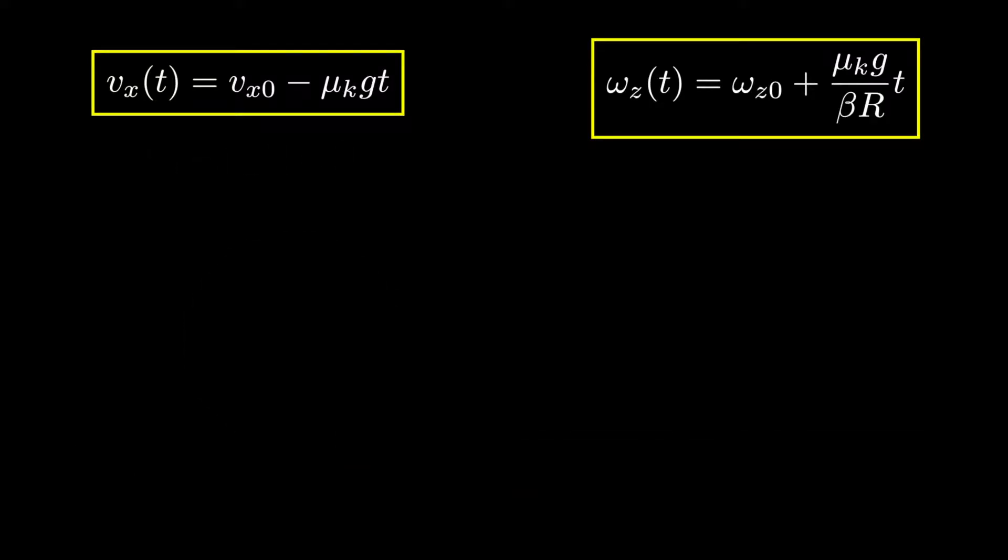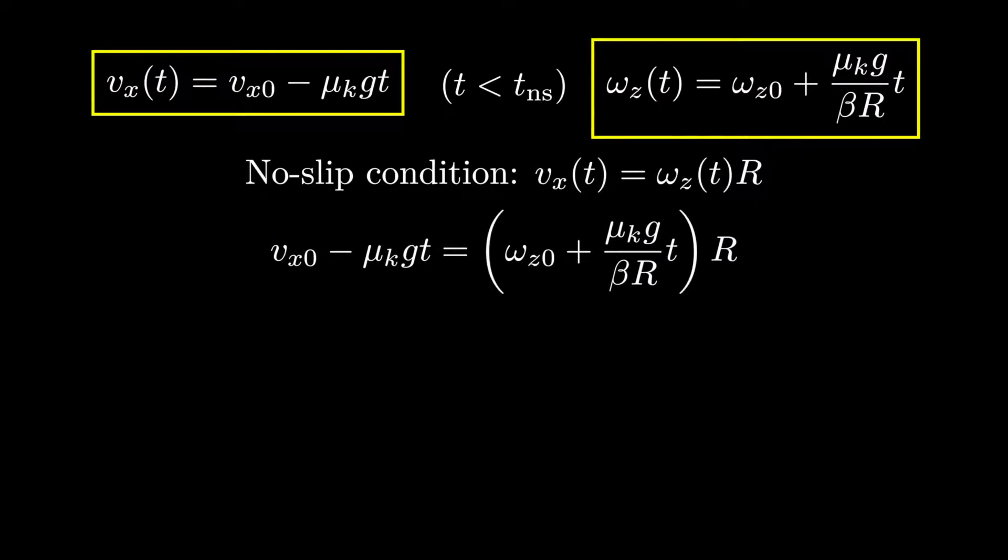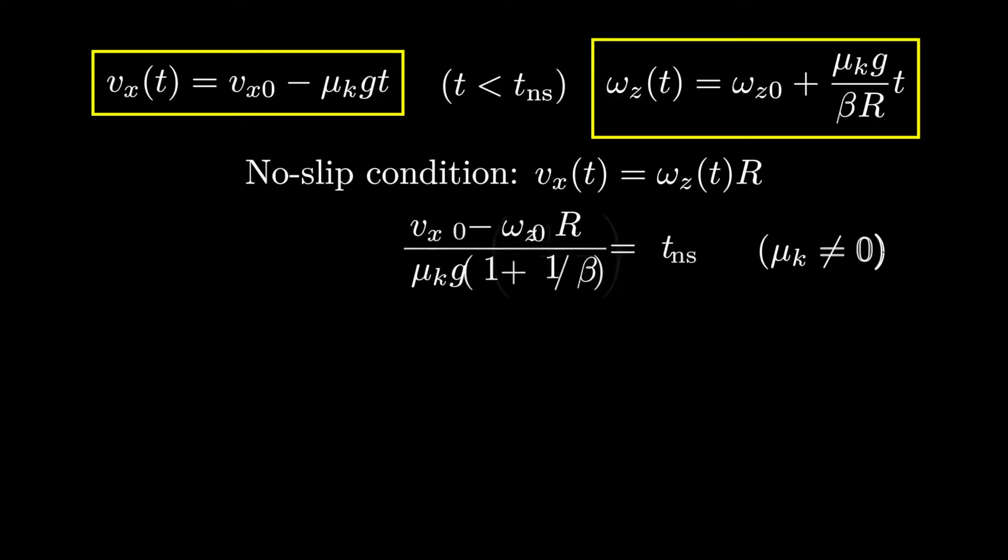To determine the no-slip time, we apply the rolling without slipping constraint to our solutions for the translational and rotational velocities. After a bit of algebra, we arrive at a solution that seems complicated and unenlightening. However, if we rewrite the denominator in terms of the translational and rotational accelerations, then we see that the no-slip time is equal to the initial velocity of the point at the bottom of the object divided by its acceleration. This ratio is exactly what one would expect for the time it takes an object to reach zero velocity when the acceleration is constant.